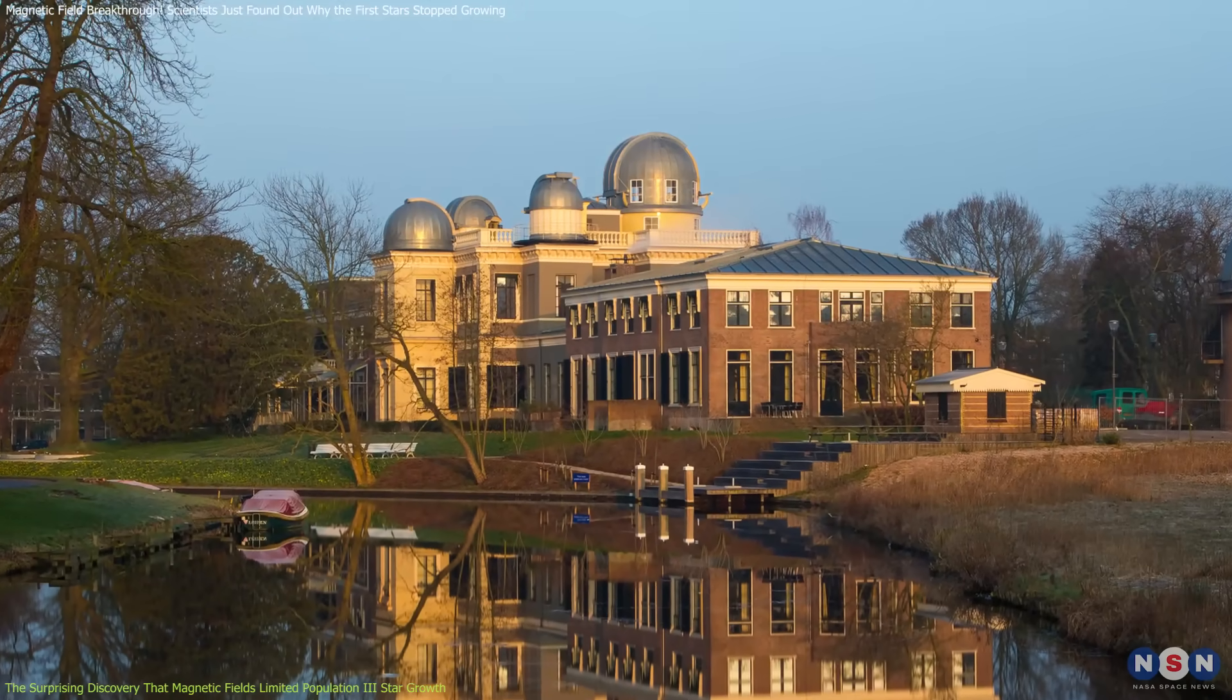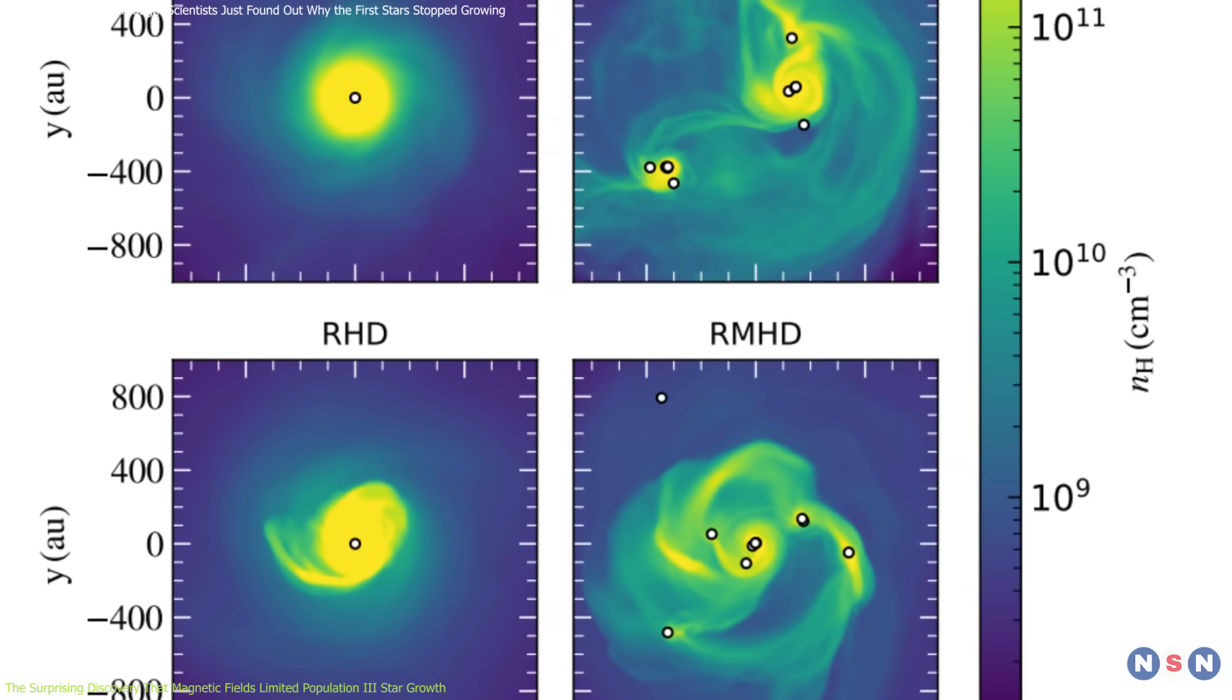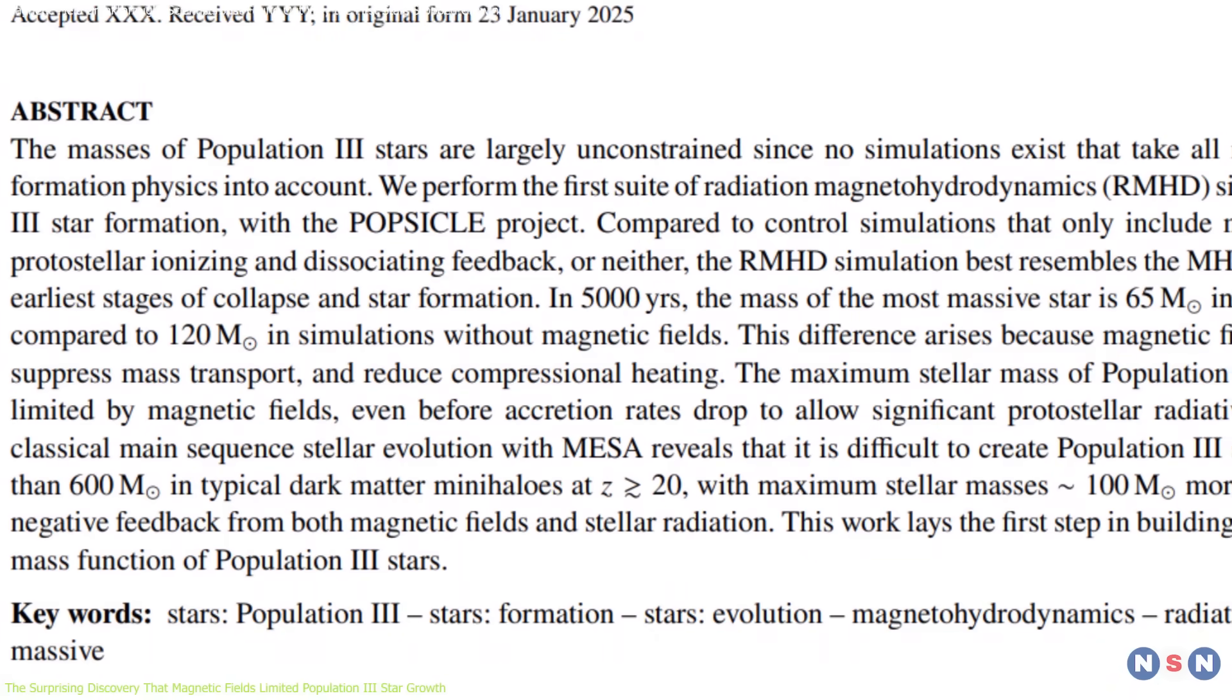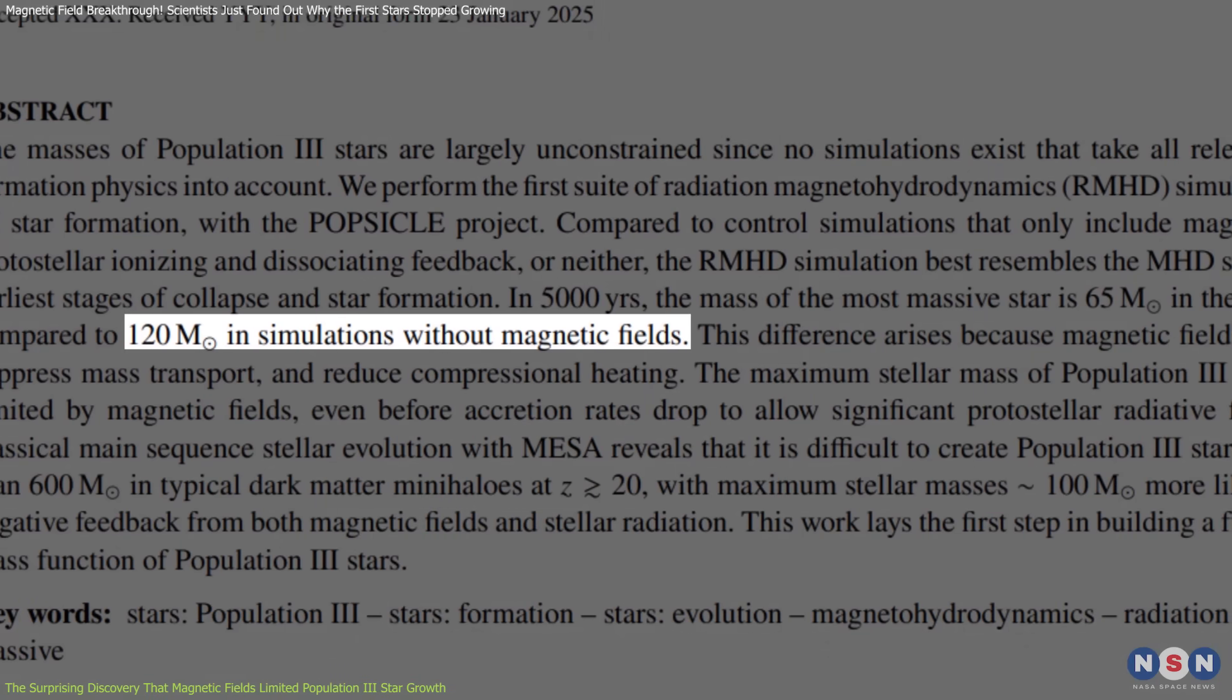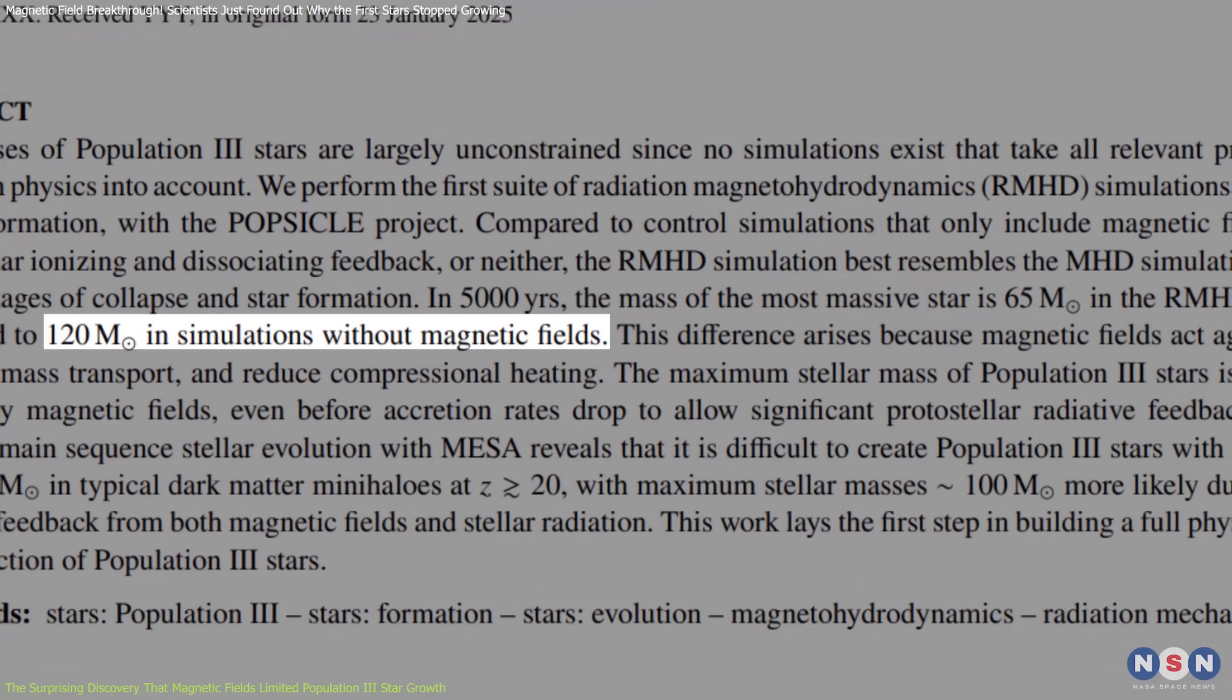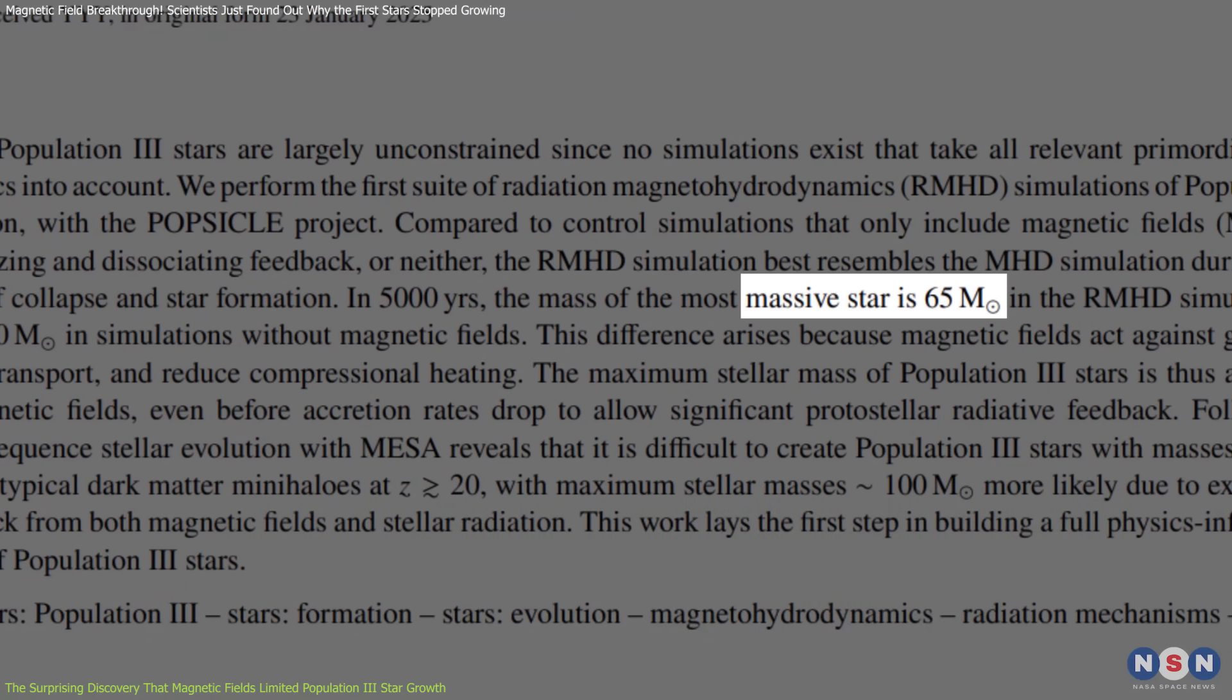Researchers at Leiden Observatory ran new simulations that included magnetic fields for the first time in a detailed way. The results were astonishing. Without magnetic fields, the Pop III stars grew up to 120 solar masses. With magnetic fields, they maxed out at 65 solar masses, almost half the size.